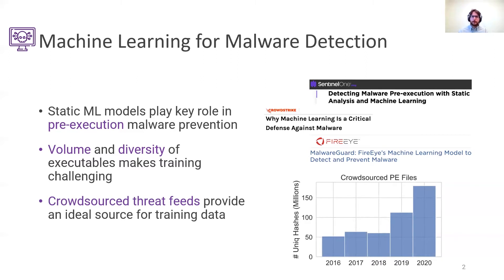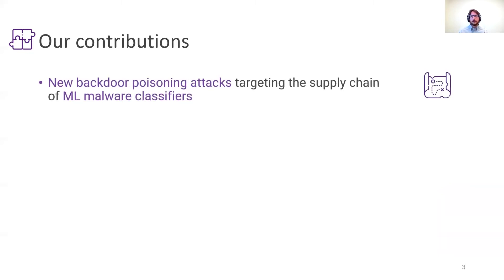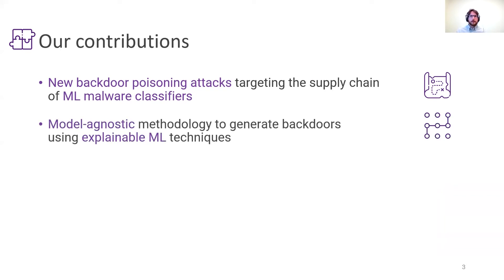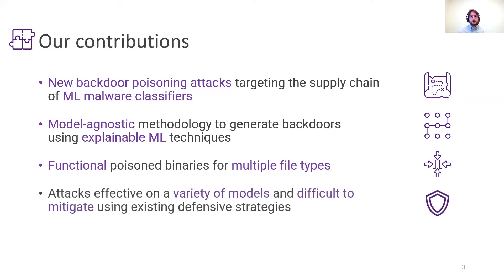We argue that a resourceful attacker can leverage this observation to their advantage, and we are going to see how. In this talk I'm going to present the main contributions of our work. I'll start by describing a new backdoor poisoning attack targeting the supply chain of machine learning malware classifiers. Then we will see a method to generate these attacks for any model based on tools developed by the machine learning community to explain model predictions. We will also see that it is possible to practically implement these attacks on different file types, and I'm going to show that these attacks are effective against a variety of models and are quite challenging to defend against.